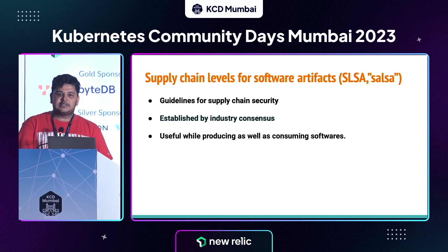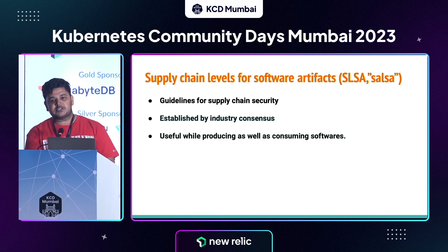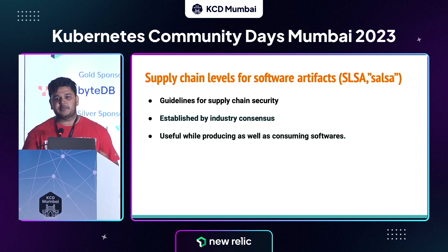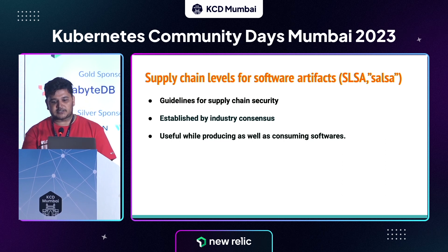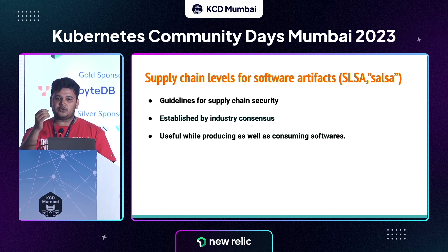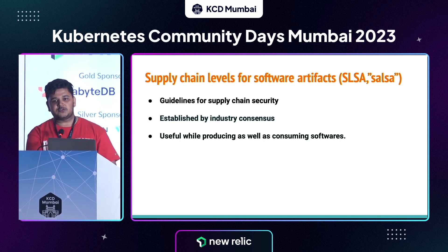Supply chain security is not a problem limited to one or two organizations. Between 2019 and 2022, supply chain attacks increased by 700%, making it a threat common to the entire software industry. To address this, the industry is establishing guidelines and commonly accepted practices. One such attempt is Supply Chain Levels for Software Artifacts, SLSA (also pronounced SALSA). This is a framework, guideline, or checklist that specifies high-level steps you should follow in your supply chain. Based on what you are currently doing, you can assign yourself a level, and SLSA also specifies steps to reach the next level. You can use it as a guideline to see where you stand and take gradual steps to reach the best possible stage.